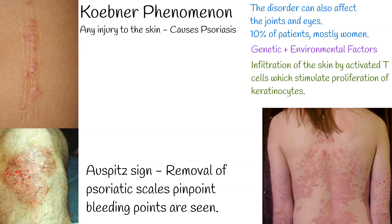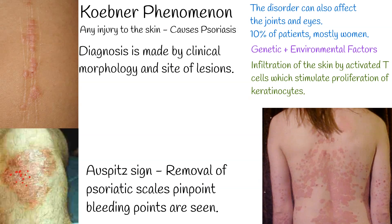Usually, diagnosis is made by clinical morphology and site of lesions. Histopathology is rarely necessary but may help to differentiate psoriasis from another dermatosis if the diagnosis is not straightforward. In the United States, about 2% of the population is affected. The prevalence is low in Japan and may be absent in Aboriginal Australians and Indians from South America.